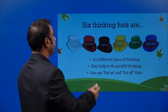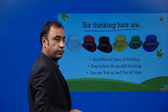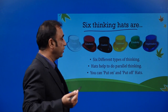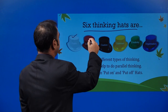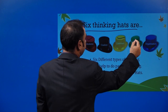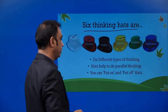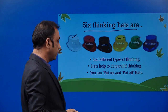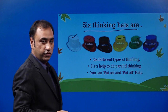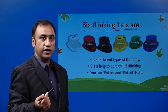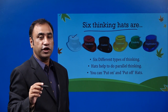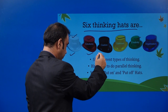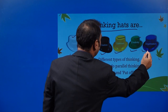You can see these are the six thinking hats. This is a tool used to think about the parallel thinking process. White hat, red hat, black hat, yellow hat, green hat, and the blue organizational hat — six different types of thinking. Hats help to do parallel thinking. You can put on and take off hats. With the same mind, the same brain, and the same point, you will think from six different perspectives with different colored hats.